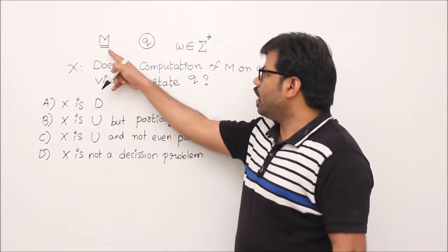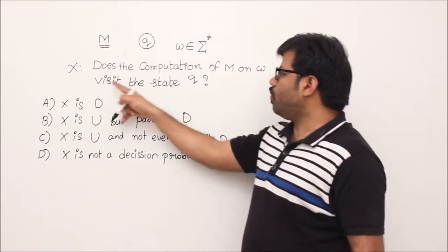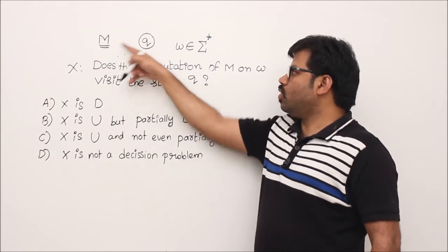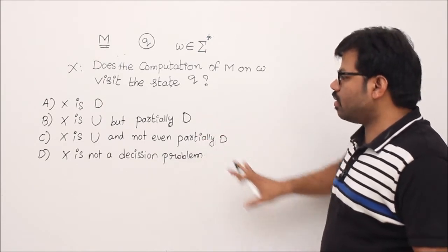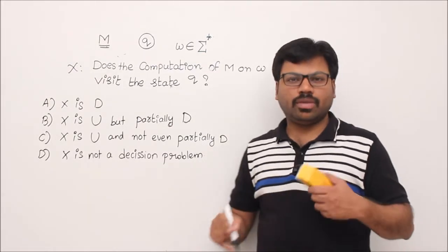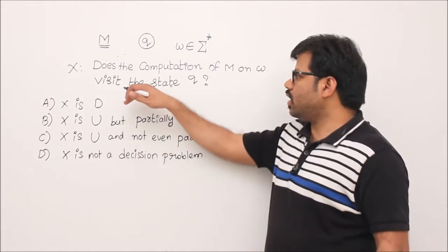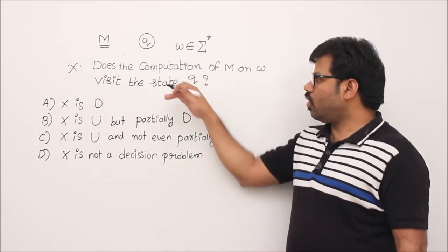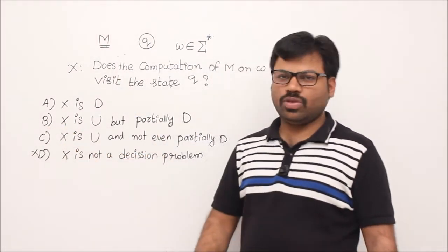Next problem: given a Turing machine M, a state Q, and input W — does the computation of M on W ever visit state Q? First, eliminate option D which says X is not a decision problem. Actually it is a decision problem, because the answer is yes or no, so option D is wrong. We are left with three choices: decidable, undecidable, or partially decidable.